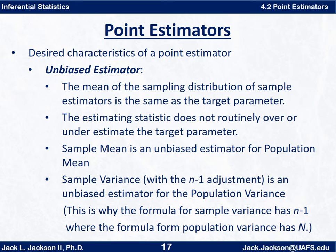However, if we use the sample variance with n in the denominator rather than n-minus-1, it turns out to be biased in estimating the population variance. To make it unbiased, we put the n-minus-1 adjustment in the denominator. That makes the sample variance an unbiased estimator for the population variance. So if we took a whole bunch of samples, computed the sample variances, and averaged them, that would tend to equal the population variance — as long as we use n-minus-1 in the sample variance formula.